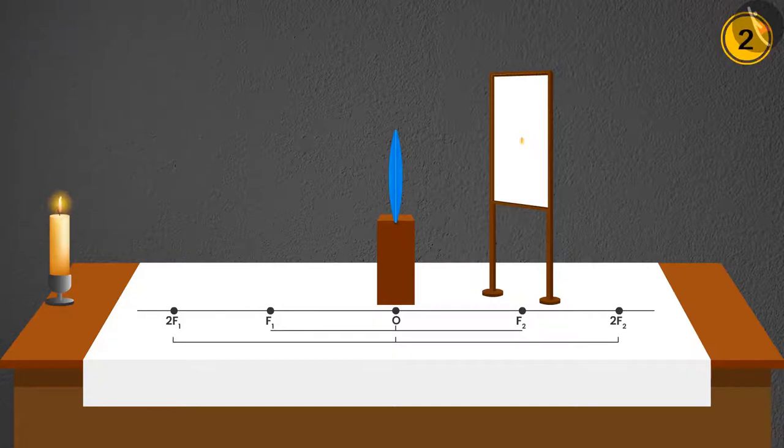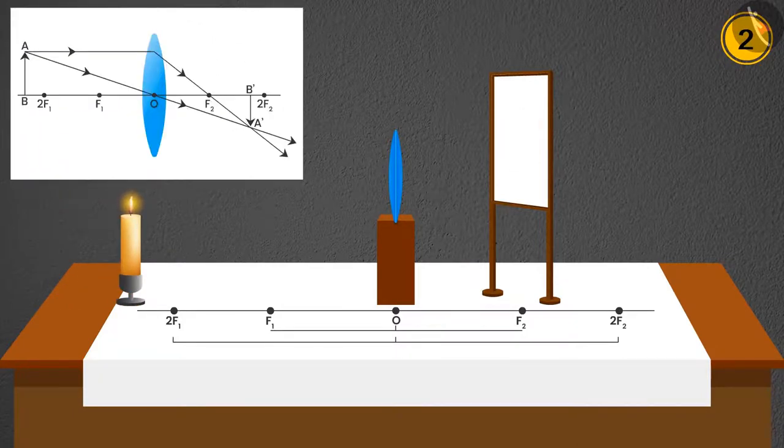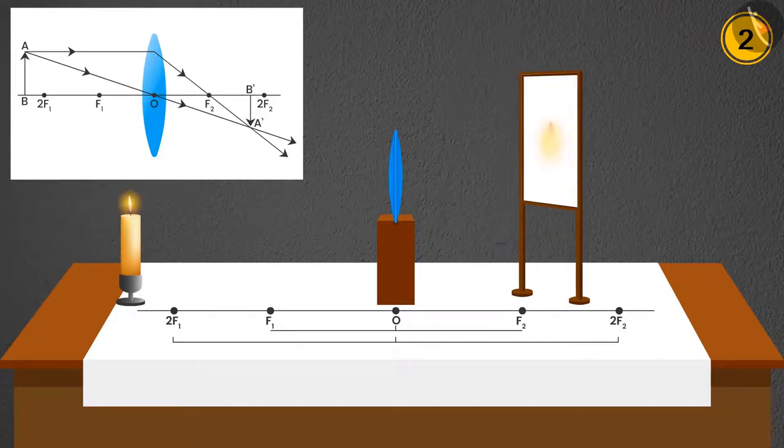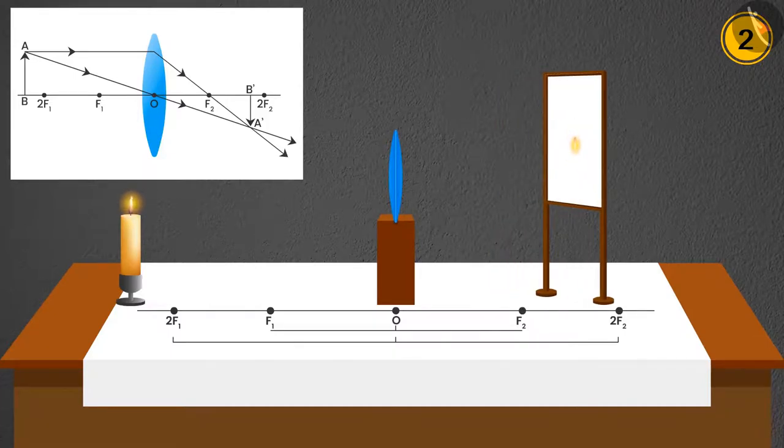Case 2: If the candle is placed beyond 2F1, after refraction, the image will be formed between F2 and 2F2. The image will be diminished as well as real and inverted.